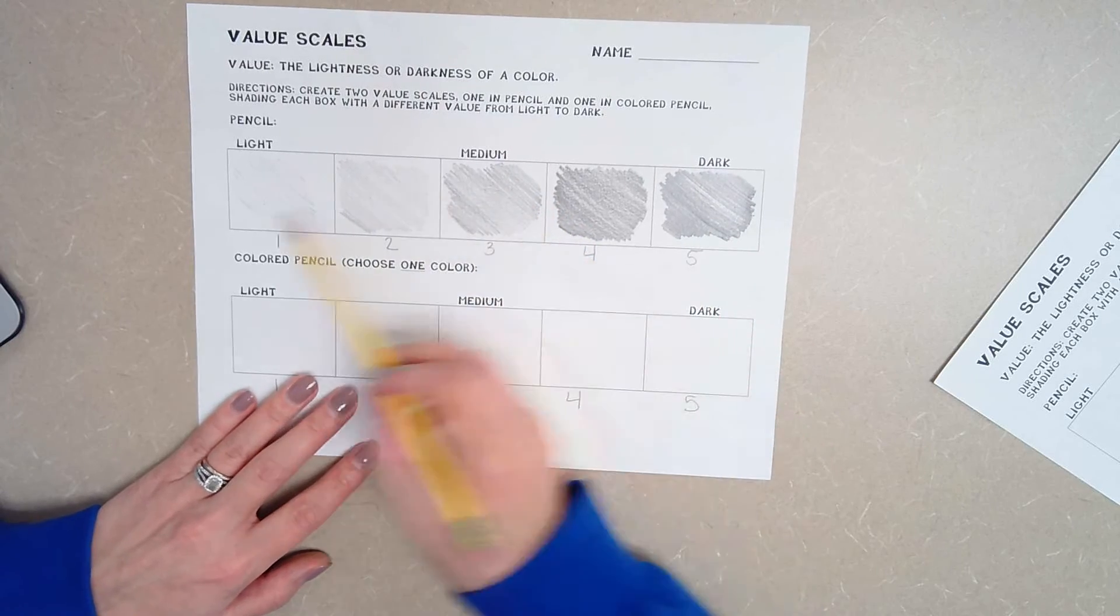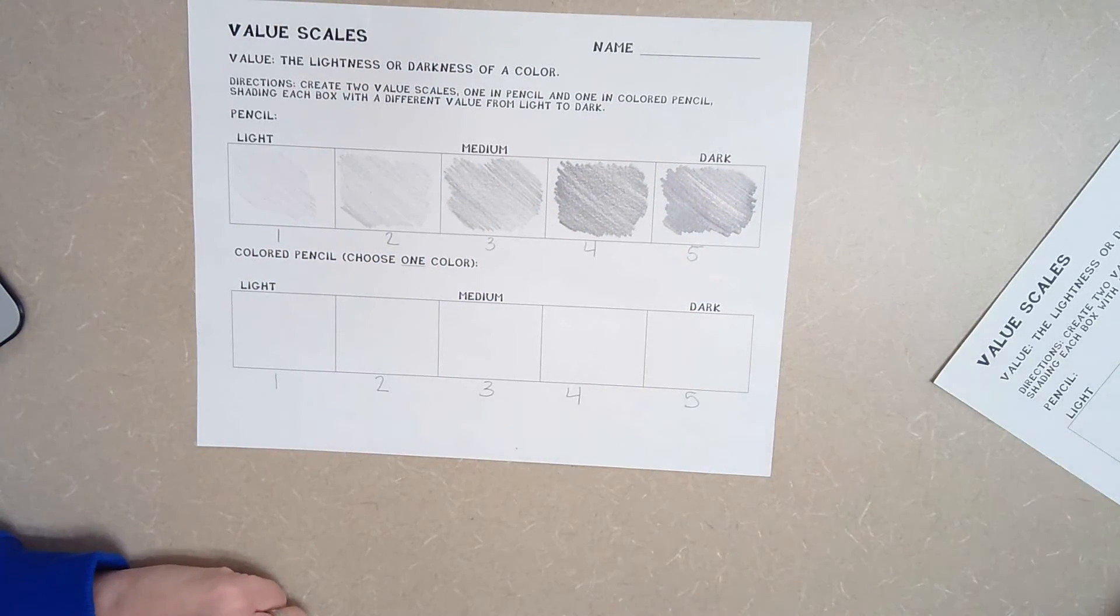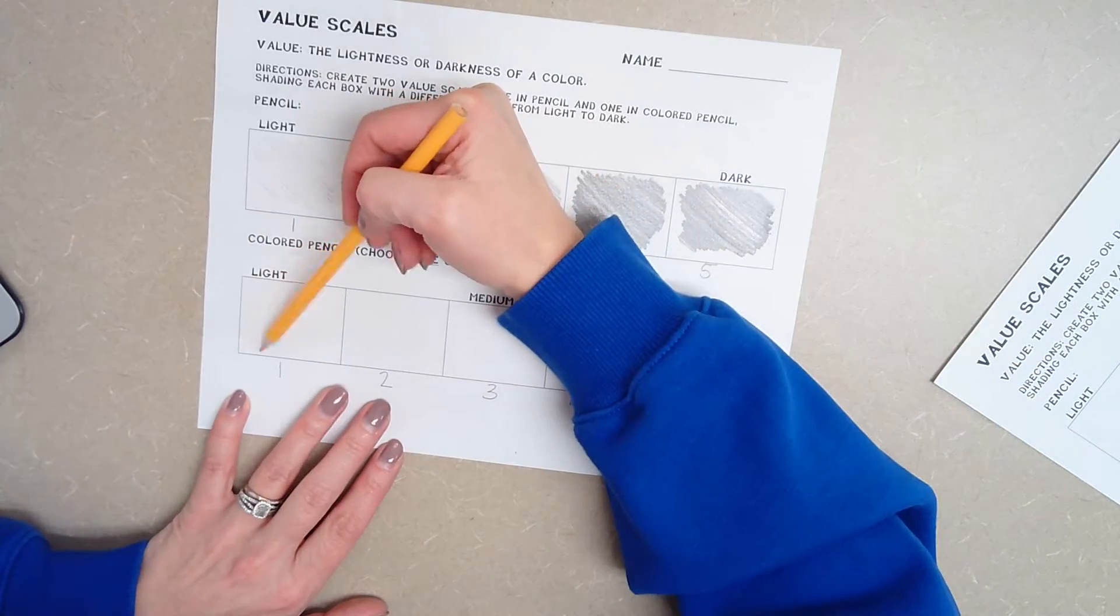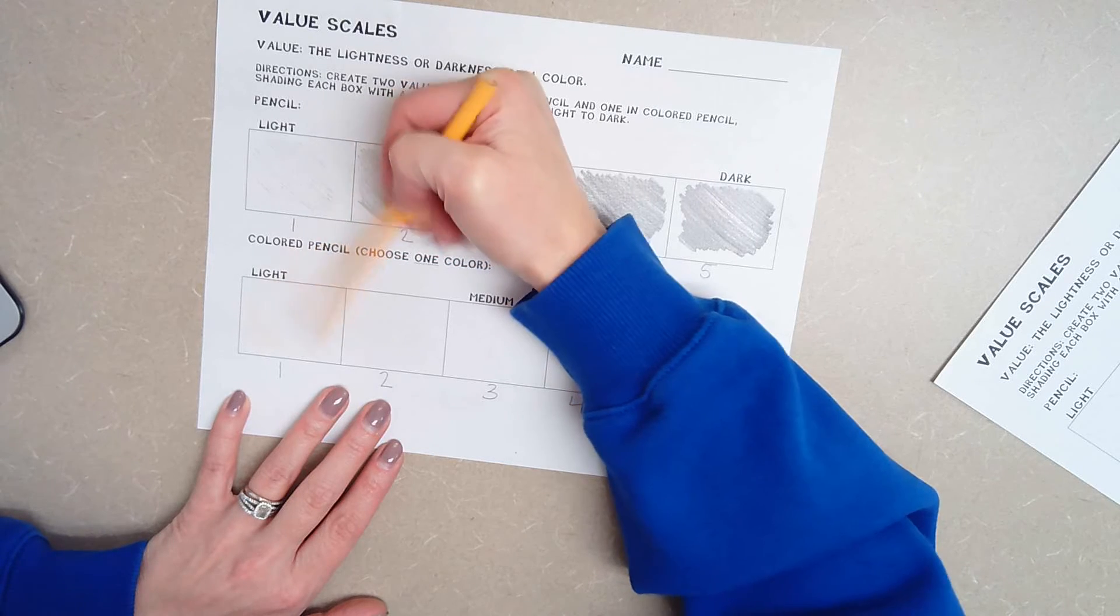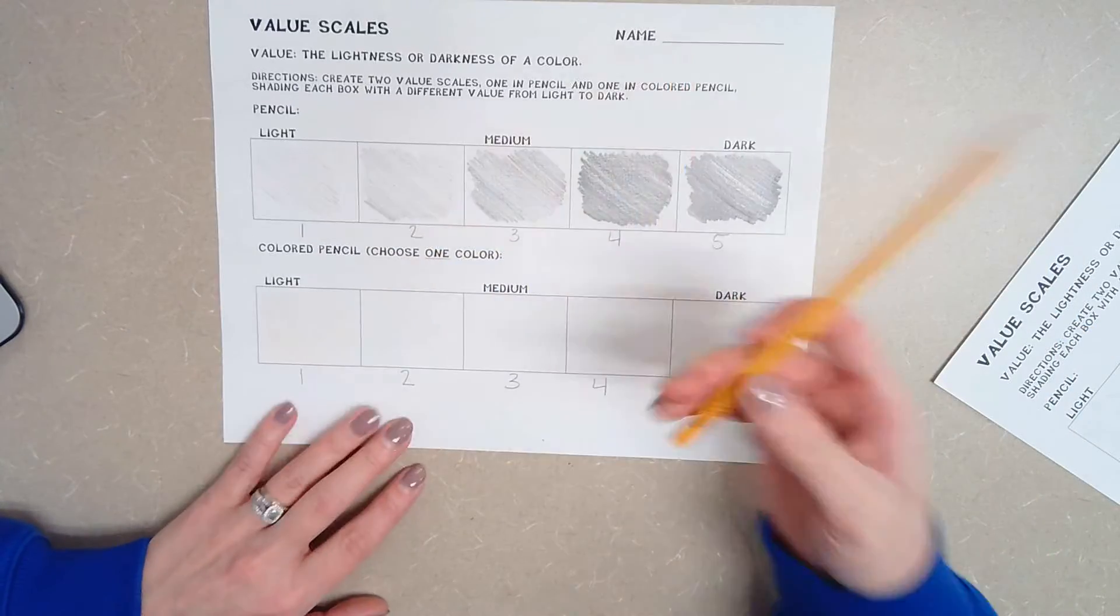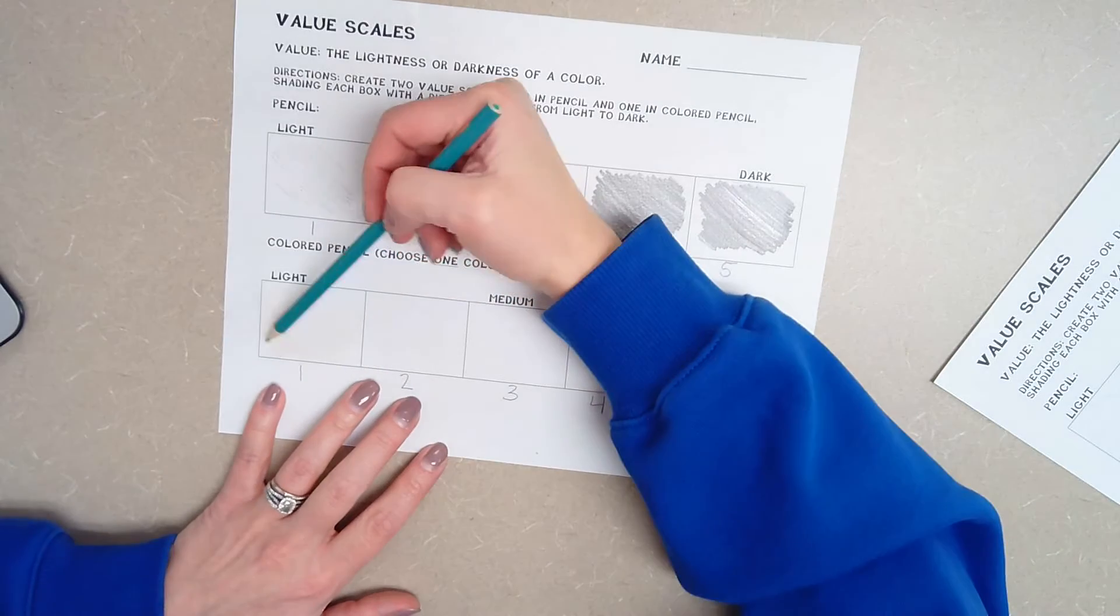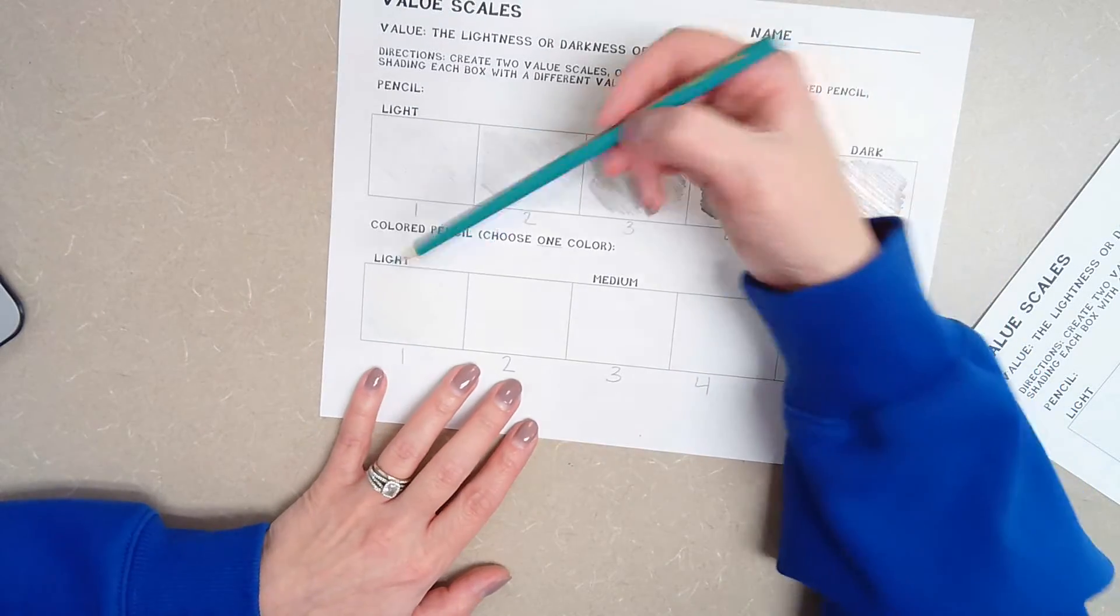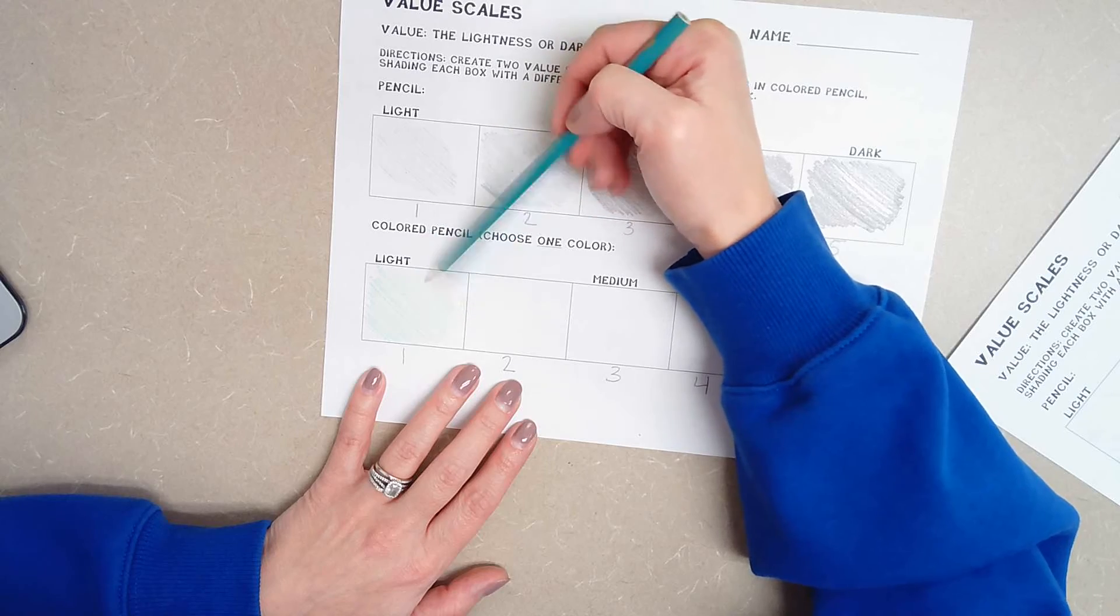Once you have the pencil value scale done, then you're going to come down here to the colored pencil. So I chose kind of this peachy orange color. I'm going to do the same thing, barely touching my paper. You know what, you guys can't really see that. I'm going to choose a different color just so you can see it a little bit better. I'll do this darker blue. Is that a tiny bit better? Maybe. I think there's a little bit of a glare here on my computer.